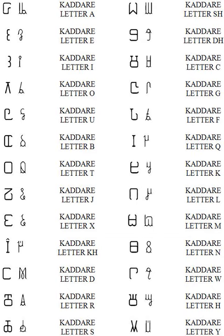The Qadar script uses both upper and lower case letters, with the lower case represented in cursive. Many characters are transcribed without having to lift the pen. Several of Qadar's letters are similar to those in the Osmanya script, while others bear a resemblance to Brahmi. There are no dedicated characters for long vowels; a vowel is made long by simply writing it twice.